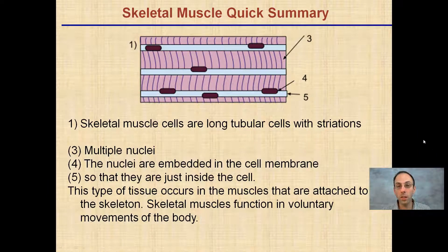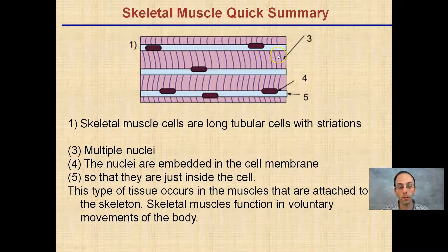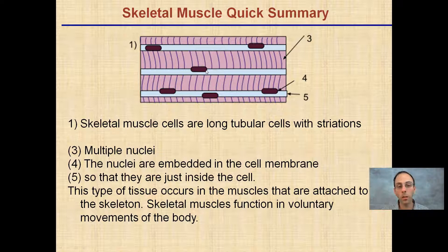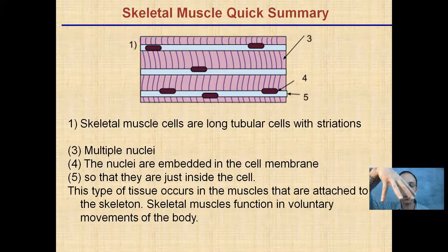I have a video that goes into each in even more detail, but here is a quick summary of skeletal muscle. They are long tubular cells with striations. They are multi-nucleated, meaning there are multiple nuclei per cell, and the nuclei are embedded in the cell membrane just inside the cell. This type of tissue occurs in the muscles attached to the skeleton, and skeletal muscles function in voluntary movements of the body.